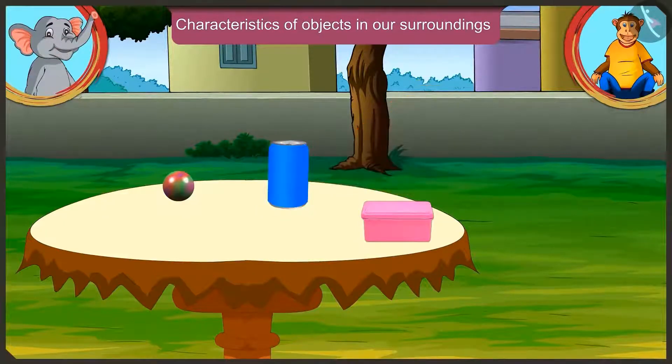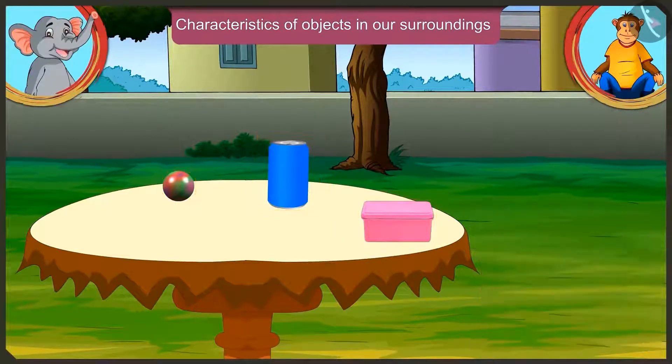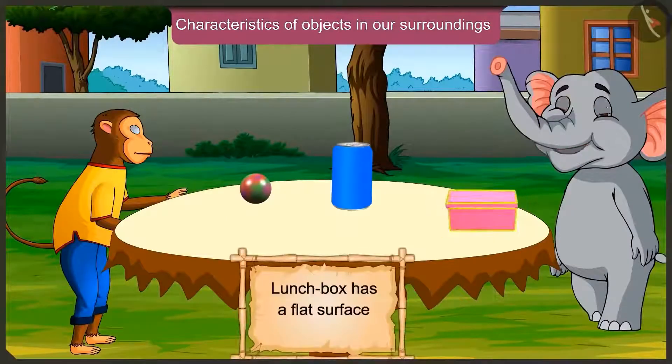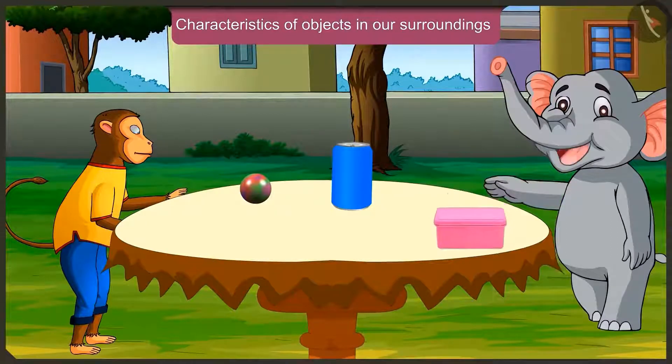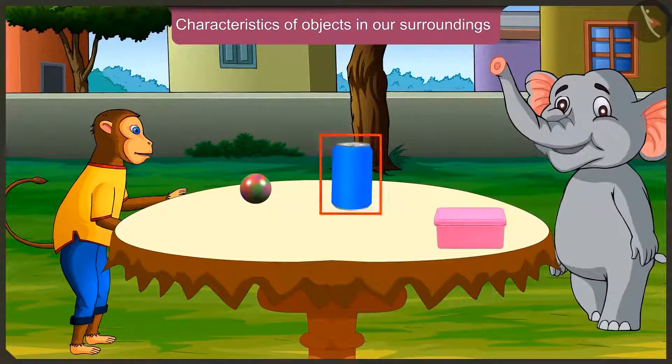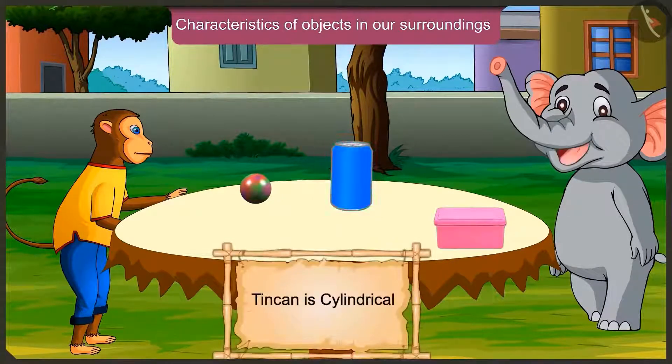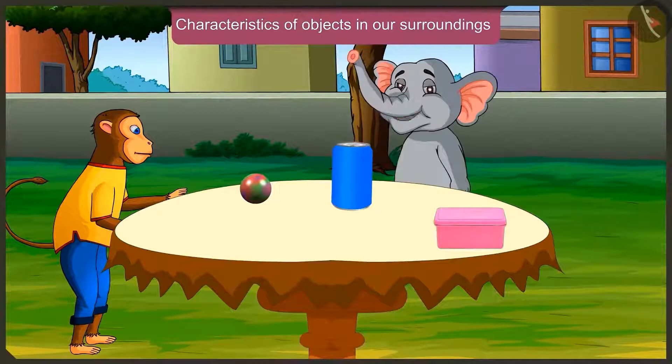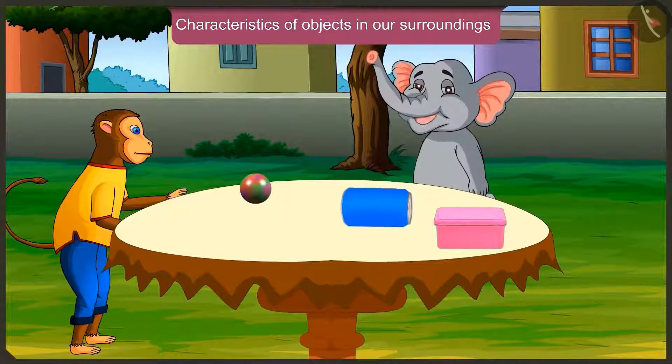Now tell me which of these objects can be moved? This is very simple. Look, this lunchbox has a flat surface. We cannot roll it like a ball. We can only slide it. And the tin box? Oh yes, this tin can has a cylindrical shape. That means it is a cylinder. So we can put it upright and slide it, and also roll it like this.